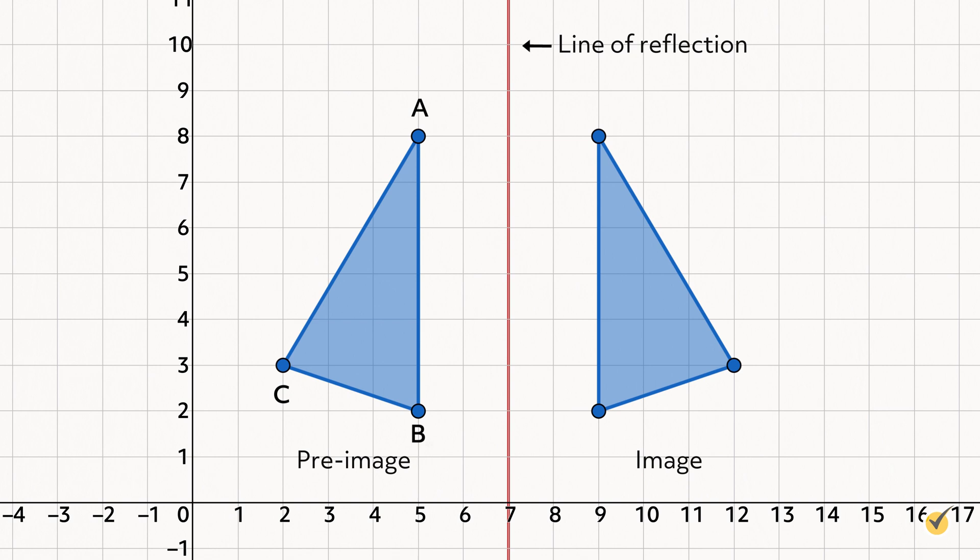We can reflect a figure in the coordinate plane over any line in the coordinate plane. Here's a triangle reflected over the line x equals 7. The triangle on the left is our original figure, or pre-image, named triangle ABC. The triangle on the right is our reflected figure, or image, named triangle A' B' C'.